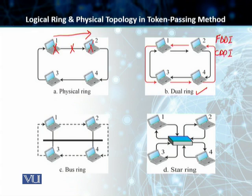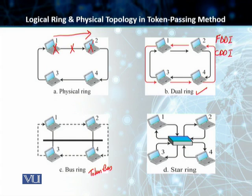The next topology is called the bus ring, also known as token bus. In this case, we have a bus network — not a physical ring — so we employ a logical ring. When a station finishes sending its data, it releases the token and inserts the address of the successor into the token. An address is therefore required in the bus ring. Our Token Bus LAN technology uses this bus ring approach.